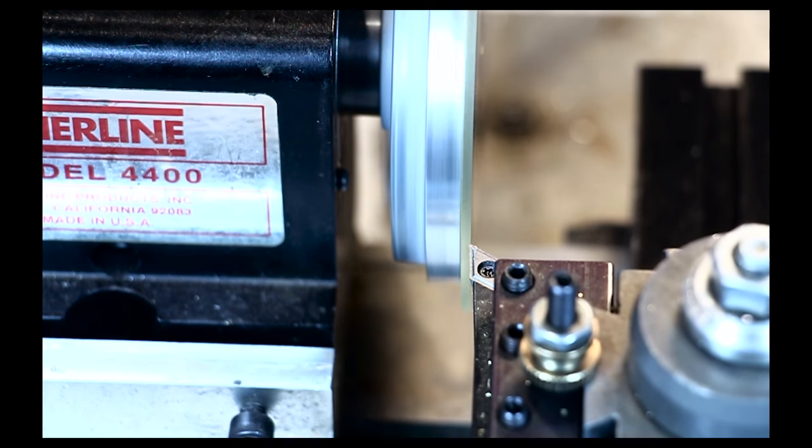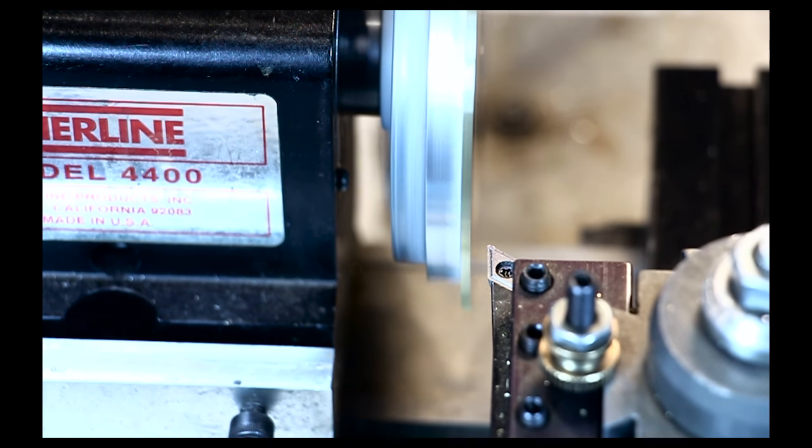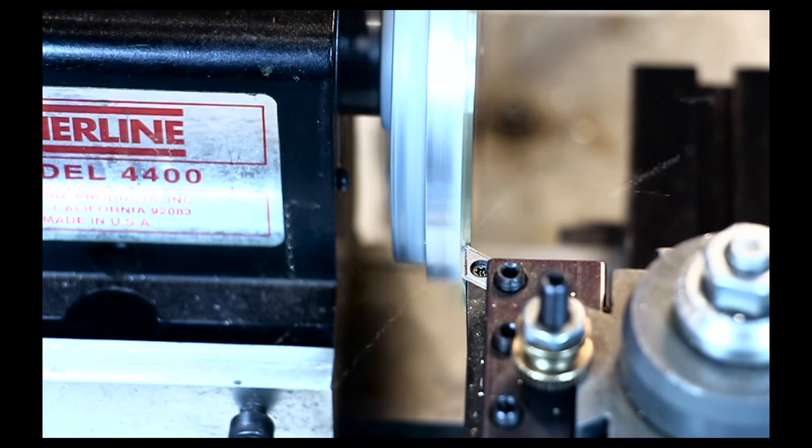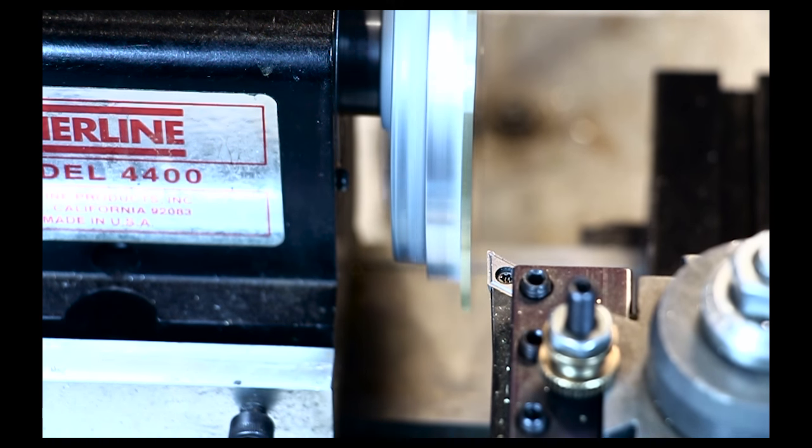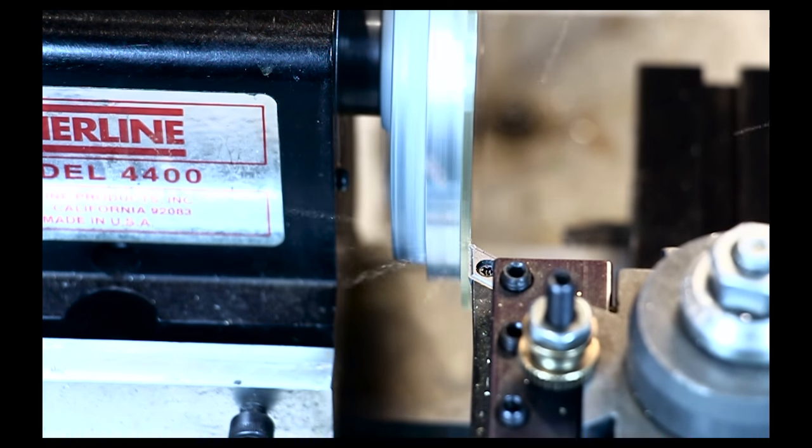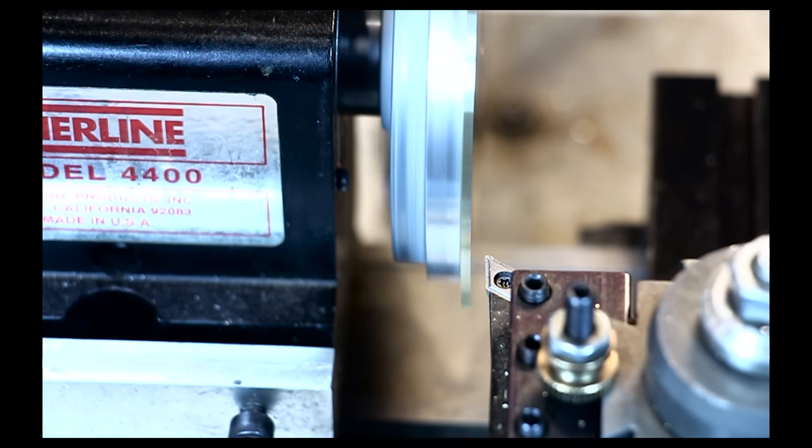First, I used my lathe just to get the rough blanks down to a measurable circle. Once I did that, I took a measurement, decided where I was, and then did the finish cut to bring it down to the final diameter.